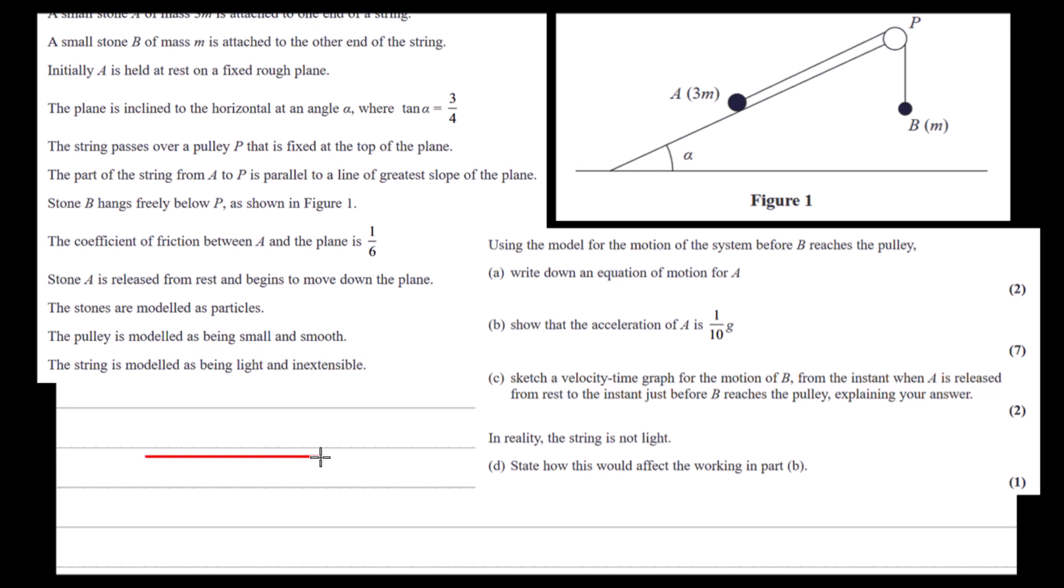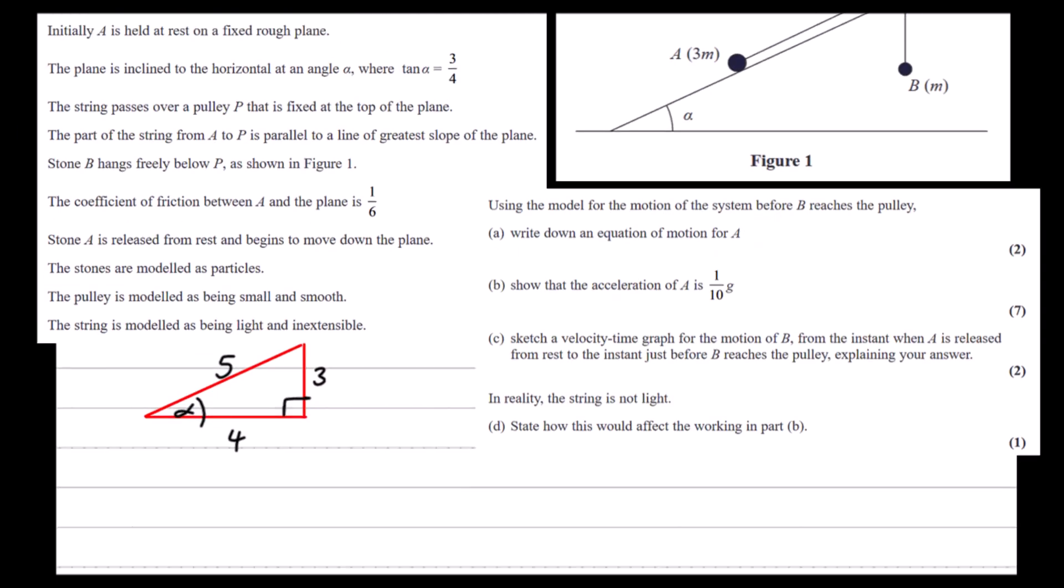So if we have a right angle triangle with the angle alpha here, tan alpha is 3 quarters, and tan is the opposite over the adjacent. So the opposite is 3, the adjacent is 4, and it's a 3-4-5 triangle. That means the hypotenuse is 5. So we can write down cos alpha, which is adjacent over hypotenuse, and sin alpha, which is opposite over hypotenuse.